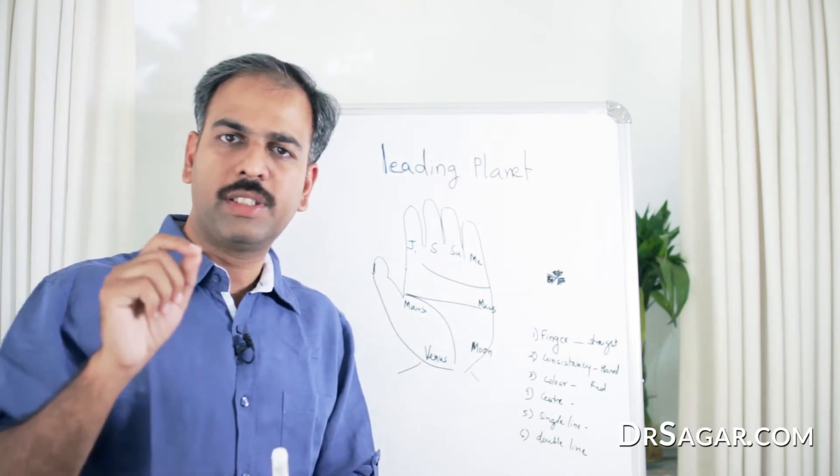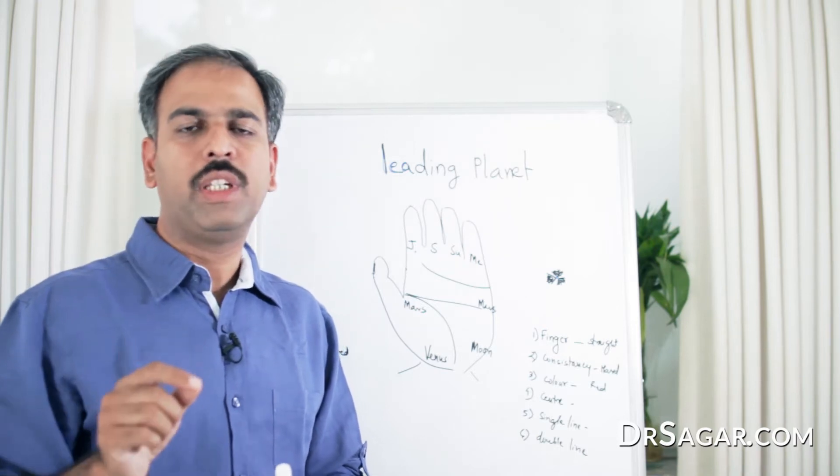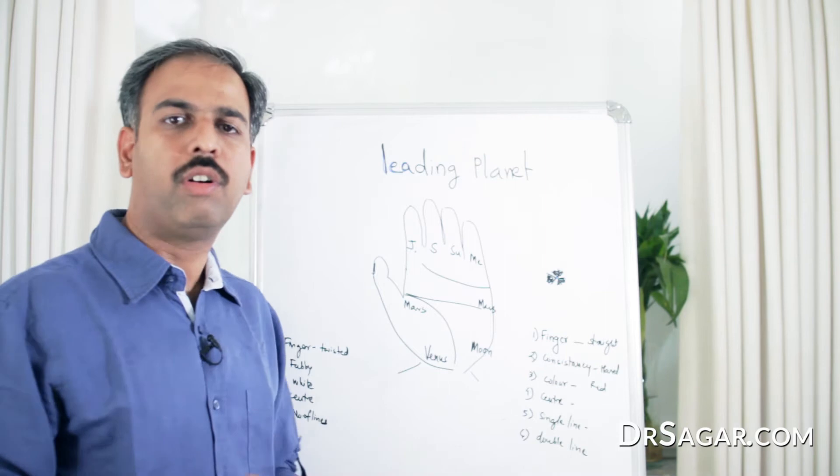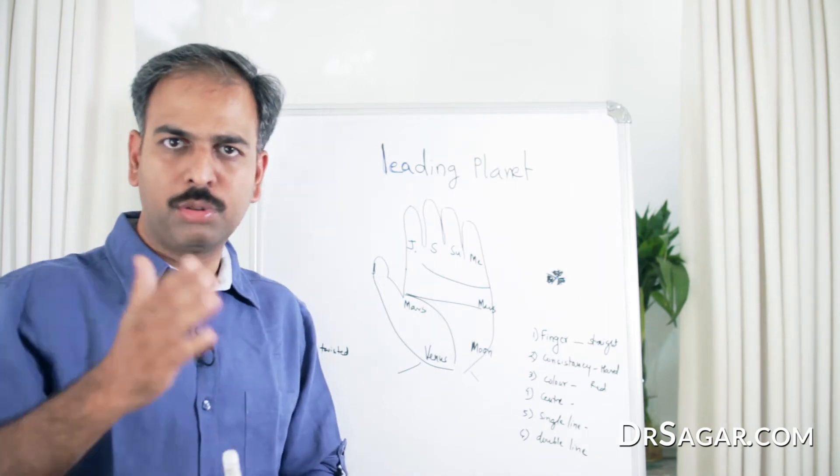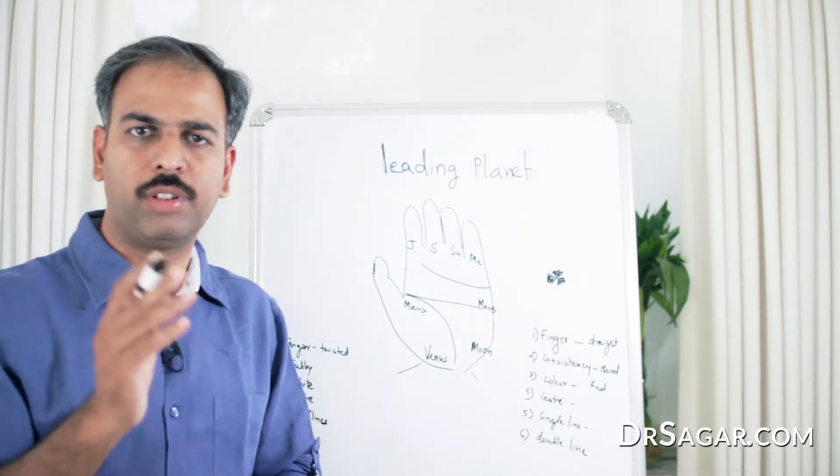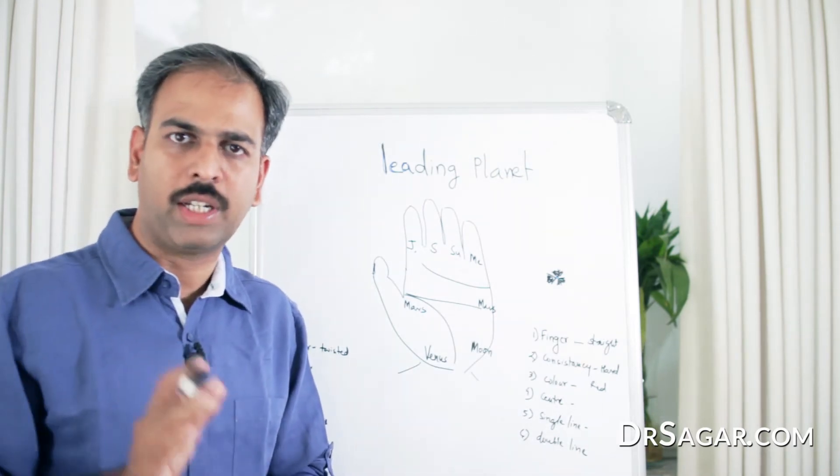Then, with this sign, a single line is a very strong sign for that planet, or maybe a double line, two lines parallel to each other. If you find all these signs on any planet of your hand, you can know it is a strong or leading planet in your hand.